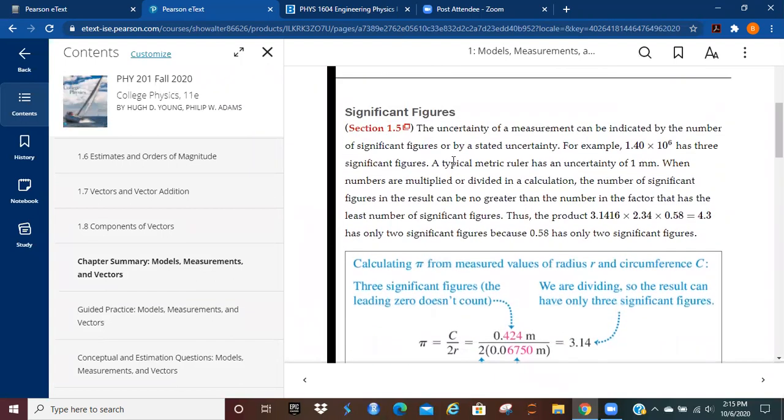Significant figures. The uncertainty of a measurement can be indicated by the number of significant figures or by a stated uncertainty. For example, if you have 1.40 times 10 to the 6th, that's going to have three significant figures. In other words, 1, 2, 3.